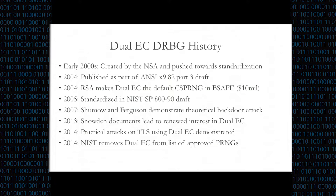They postulated that if you have an attacker who knows the discrete log between the two points in the curve, P and Q, that attacker can, given one output of the random number generator, recover the state of the generator and therefore predict every number it will ever generate in the future. After some of the Snowden revelations in 2013, our research group took a closer look at dual EC. In 2014 at USENIX, we demonstrated practical attacks on TLS if you're using dual EC to supply your random numbers. Later that year, NIST removed dual EC from their list of approved PRNGs.